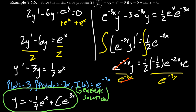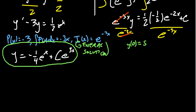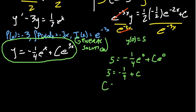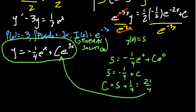We're solving an initial value problem, so we use the initial condition y(0) equals 5. Plugging in x equals 0: e to the 0 is 1, so 5 equals negative 1/4 plus c. Adding 1/4 to both sides gives c equals 5 plus 1/4, which is 21/4. Plugging that in, the solution is y equals negative 1/4 e to the x plus 21/4 e to the 3x.